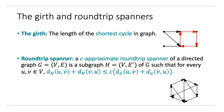A C-approximated round-trip spanner of a directed graph G is a subgraph H such that for any two nodes U and V, the round-trip distance of U and V in H is at most C times the round-trip distance of U and V in G. The round-trip distance of U and V in a graph is the distance from U to V plus the distance from V to U.